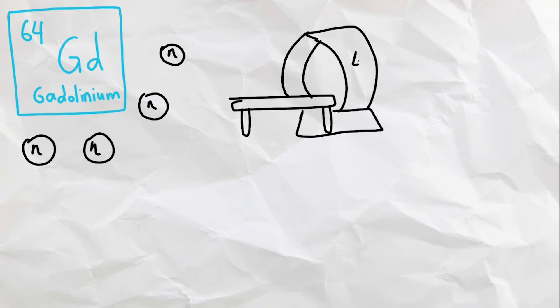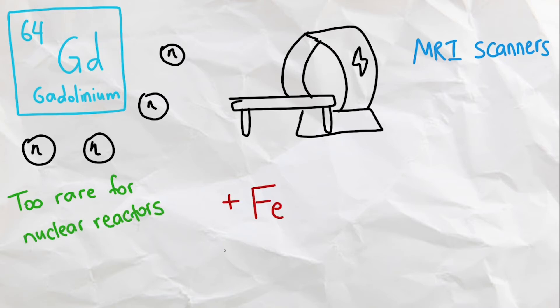Next, we have Gadolinium, the best absorber for neutrons. However, it is more commonly used in MRI machines to scan for cancer tumors instead of in nuclear reactors, since Gadolinium isotopes that absorb neutrons are quite rare. Gadolinium is also used in alloys with iron and chromium, making them more resistant to high temperatures and oxidation.